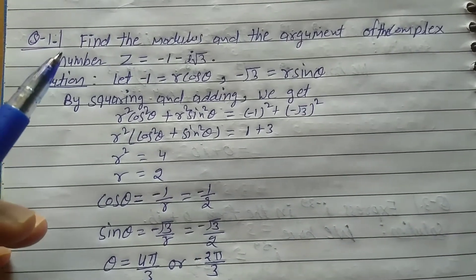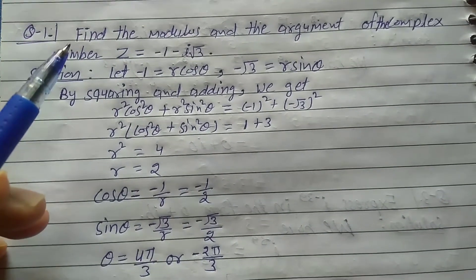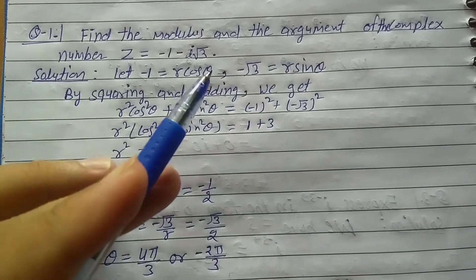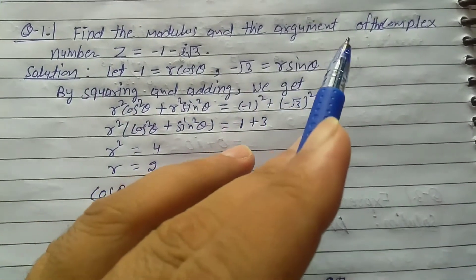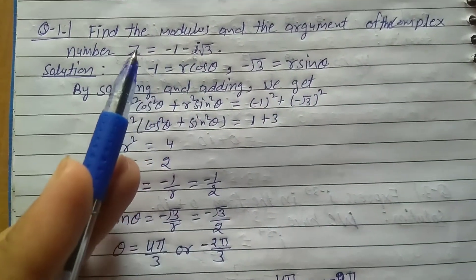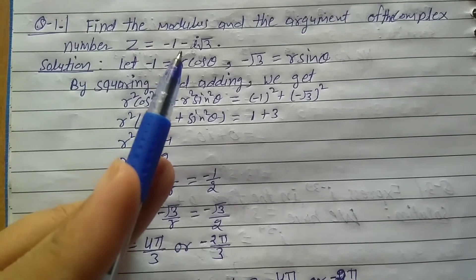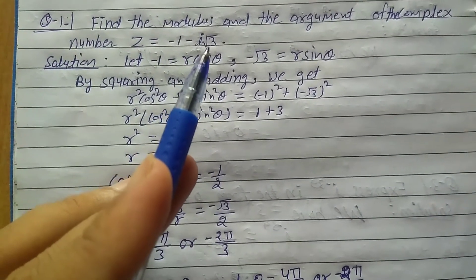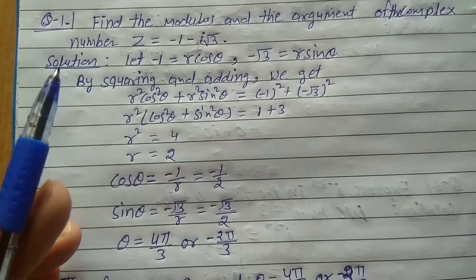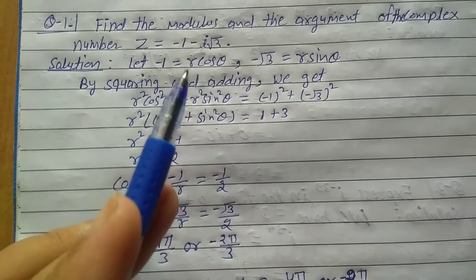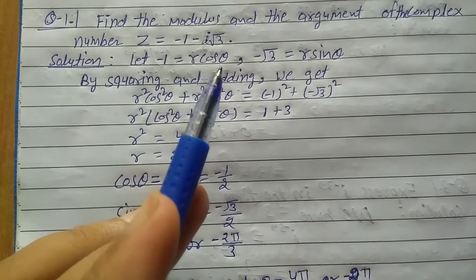We'll explain question number one from exercise 5.2, class 11th. Find the modulus and the argument of the complex number z = -1 - i√3. Solution: Let -1 = r cos θ and -√3 = r sin θ.